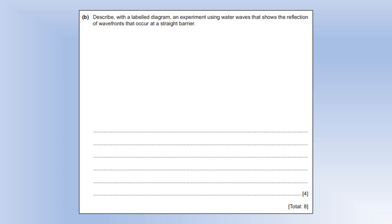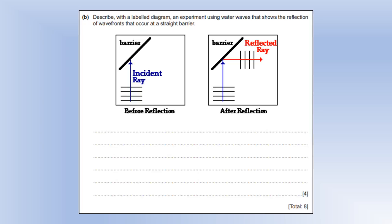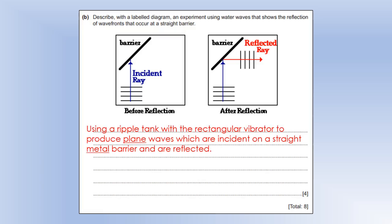Describe with a labeled diagram an experiment using water waves that shows reflection of wave fronts that occur at a barrier. So usually we use a ripple tank to show wave fronts. So what we do is we have something to create plane waves that we send towards the barrier and then we can observe the reflected wave fronts. So how are we actually going to create the waves? Well, like I said, we'll use a ripple tank and we'll use a rectangular vibrator to create these plane waves or these straight waves.